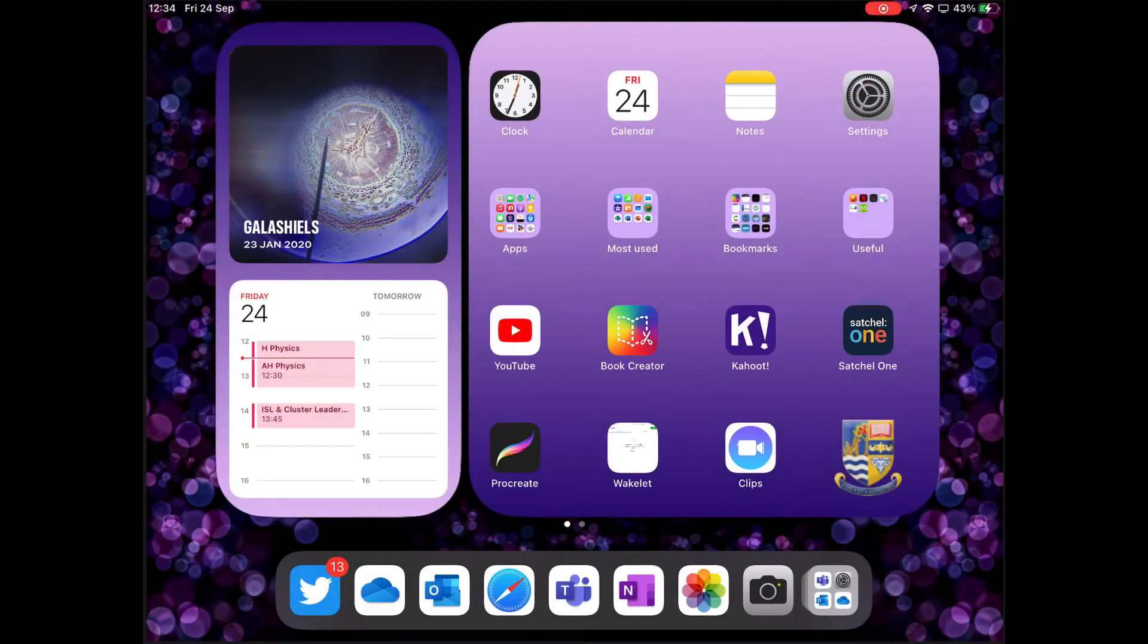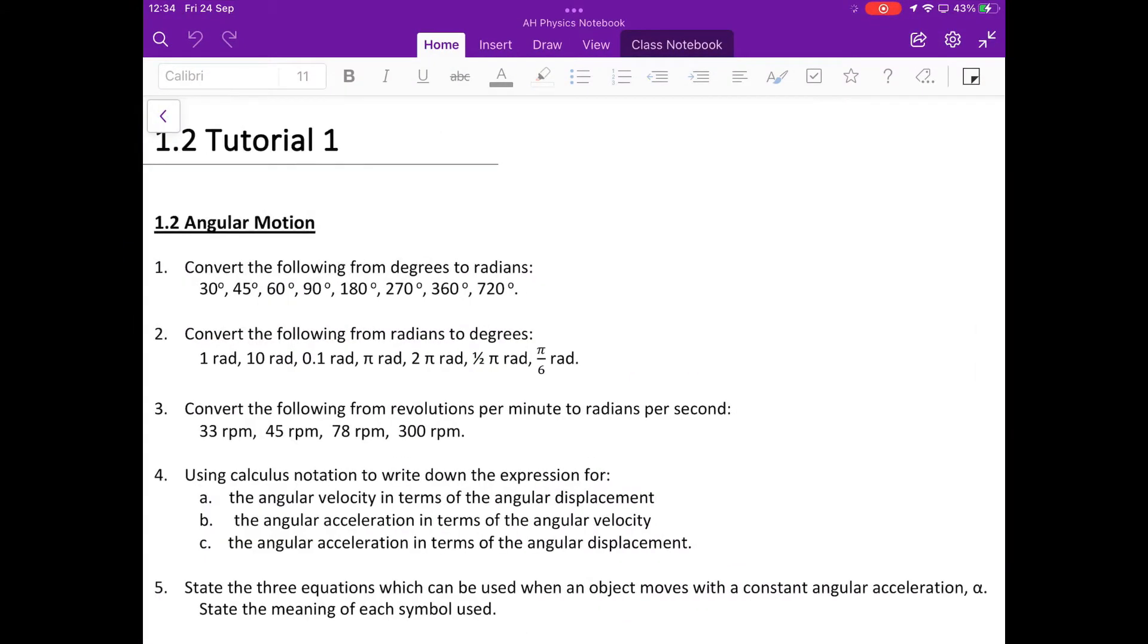With the iOS 15 update, it's now even easier to split your screen and work on two things at the same time. Open up any application and at the top of the screen you'll see three small dots. Clicking here gives you three display options.